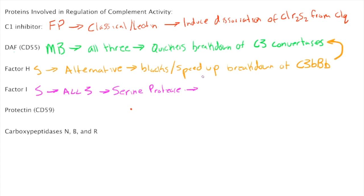It cleaves C4B and C3B using the cofactors MCP, CR1, factor H, or C4BP. So those are factors that you might want to know.